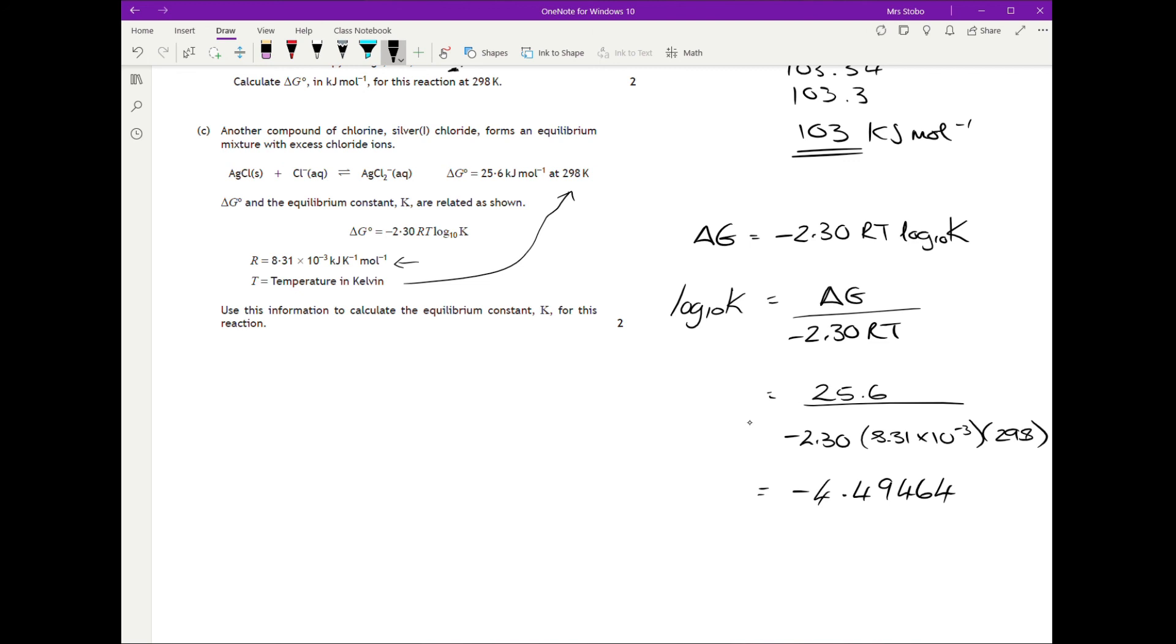But this is not K. We need K. So we need to get rid of our log 10. So we're basically just going to do a 10 to the power. So K, when we flip it over, is going to be 10 to the minus 4.49464. Okay, plug it into your calculator, and you should get 3.20 times 10 to the minus 5. It was accepting another kind of two or three numbers or figures on this one here. No units on equilibrium constant, you should know that.